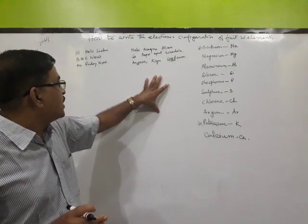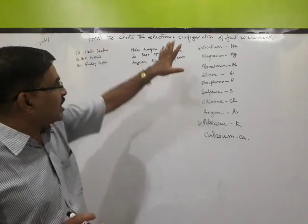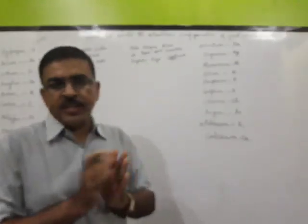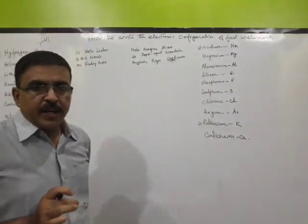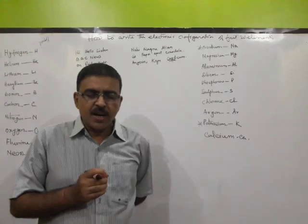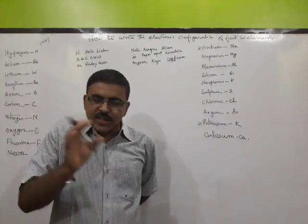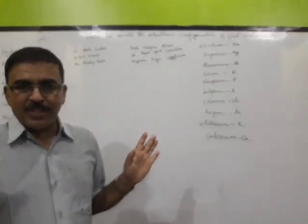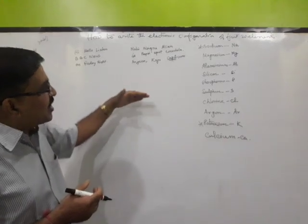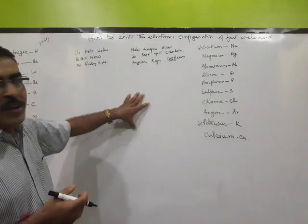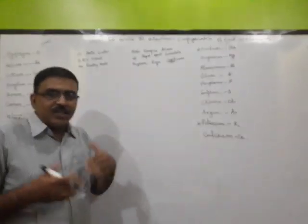Today we will learn the basic things — how to write the electronic configuration of the first 20 elements. This is very important because we have seen that children are afraid of chemistry. When they see chemical equations, they fall away from chemistry. So we will try to do that first, just a refreshment and then build a system in your mind.